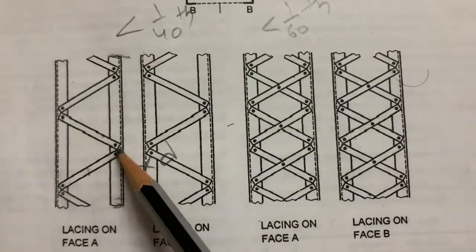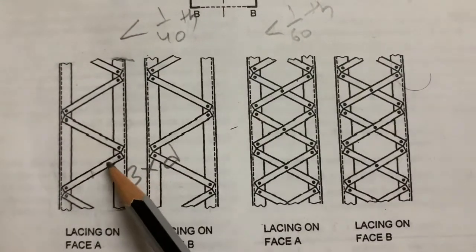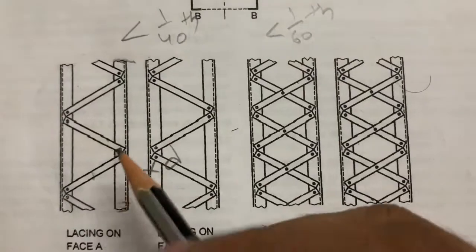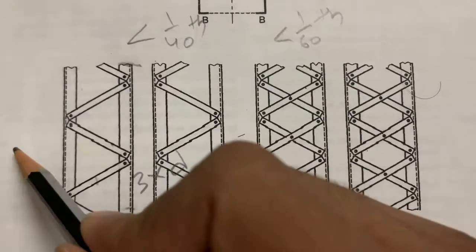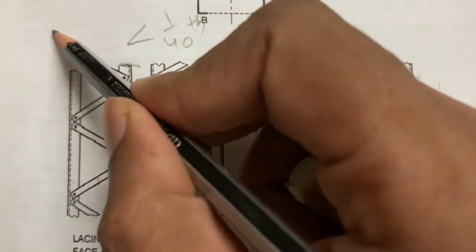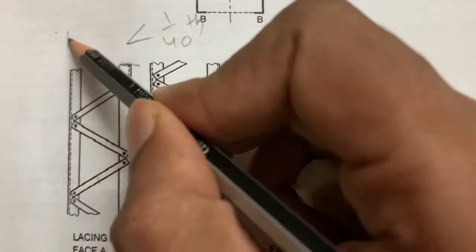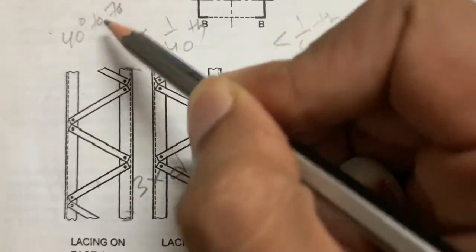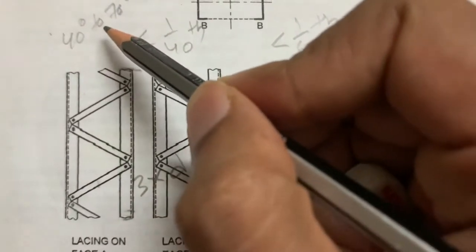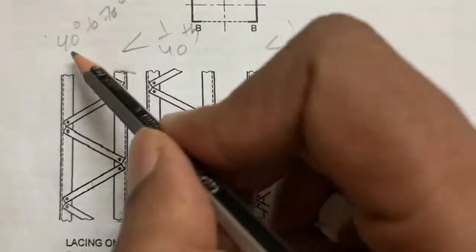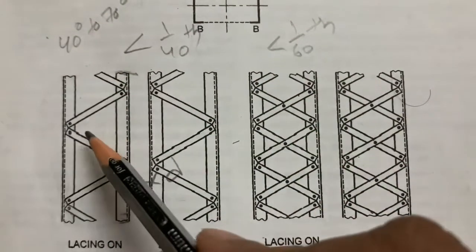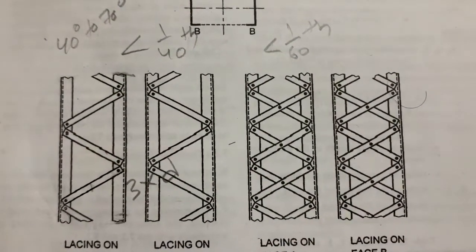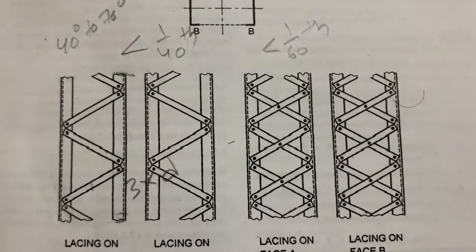When it comes to the angle of inclination — how much angle we need to maintain — the code specifies it should be between 40 degrees and 70 degrees. So the lacing can be arranged anywhere in the range of 40°, 45°, 50°, 55°, 60°, up to 70°.